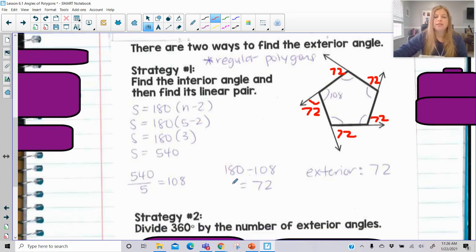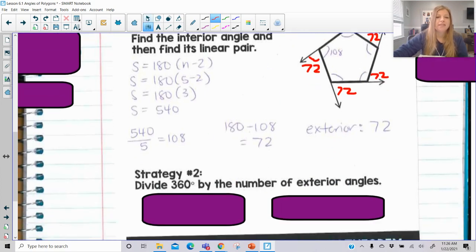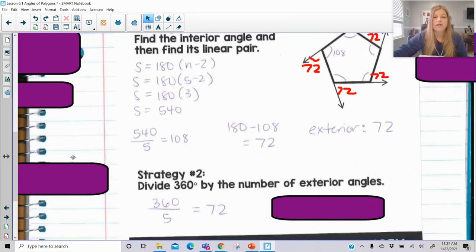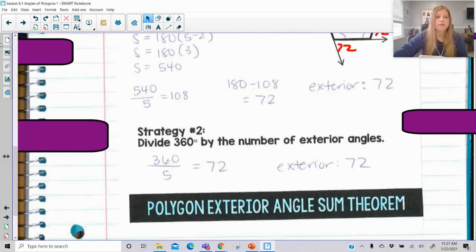Strategy two is if I give you this pentagon and I just say, divide 360 by the number of exterior angles, that would be it. If I give you a regular pentagon and I just say, take 360 divided by 5, the number of sides of the figure, then you're immediately going to get that the exterior angle is 72. That's actually then also a really quick way to then find the interior because you would do 180 minus that 72 and you would be done.